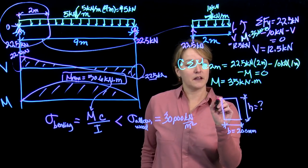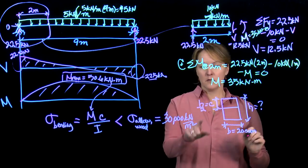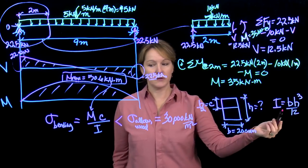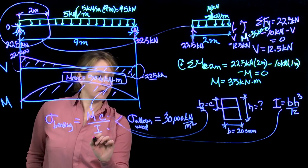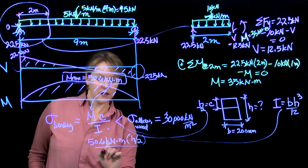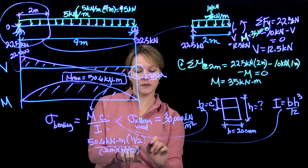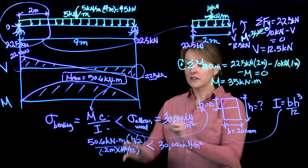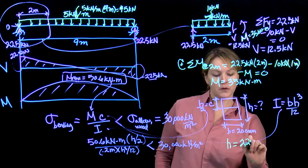Looking at this equation, C is h over 2, going from the middle to the outside edge. Moment of inertia for a rectangular cross section is base times height cubed over 12, resistance to bending. These values get plugged into this equation, leaving me with just one variable h. So I'll have 50.6 kilonewton meters times h over 2, over bh cubed. B is 0.2 meters, times h cubed over 12. That has to be less than 30,000 kilonewtons per meter squared. The only unknown is h, so this will allow me to calculate the required height. And if we calculate it, we find that h is 225 millimeters.